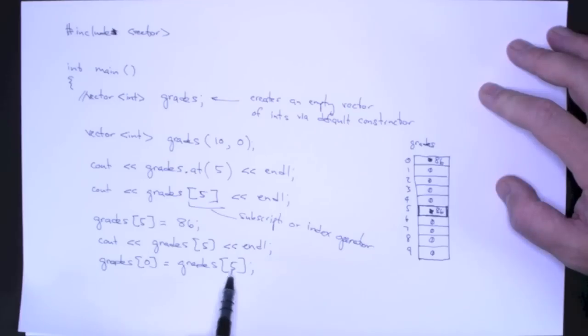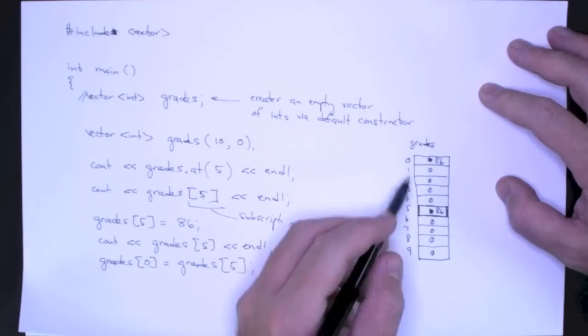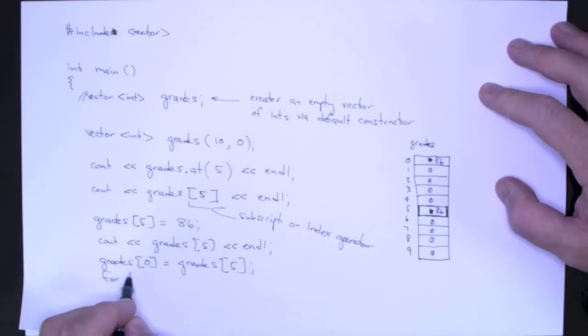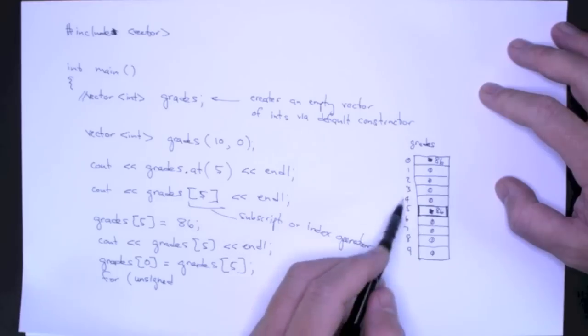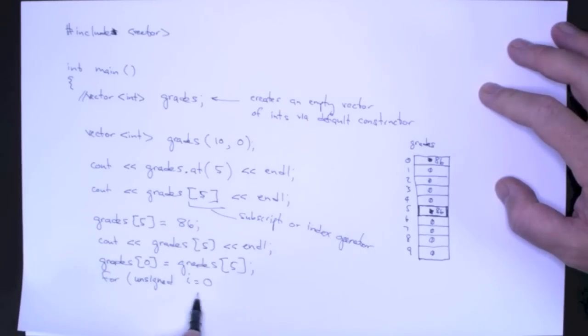And as you can see, I've been using integer literals or constants here to refer to these positions, but I can also use the value of a variable. So if I want to loop over all of the elements of my vector, I can simply write a for loop. And the value that I get from the size method is actually an unsigned integer. So the proper type here is unsigned. And I want to start at position 0. And I want to loop up to size.